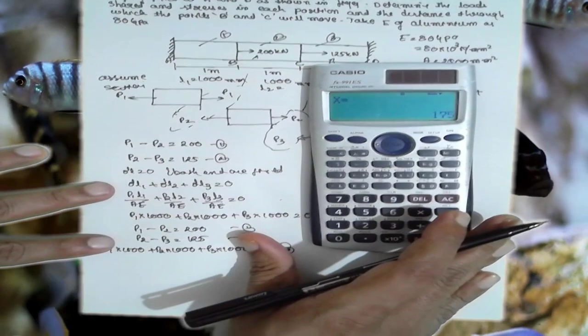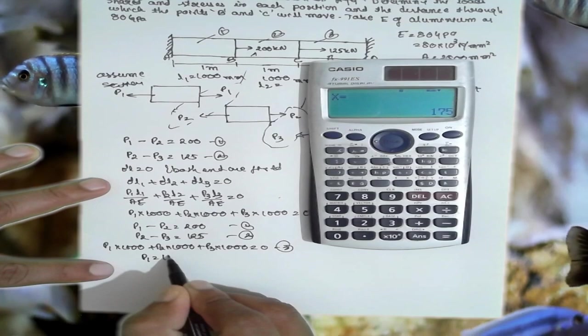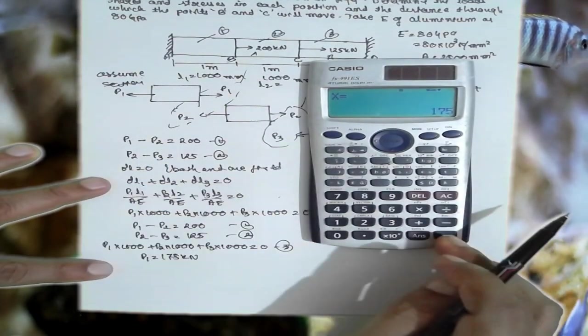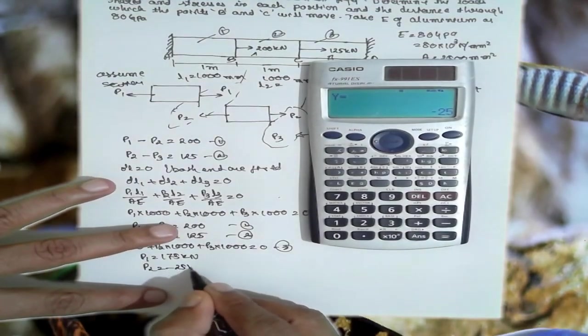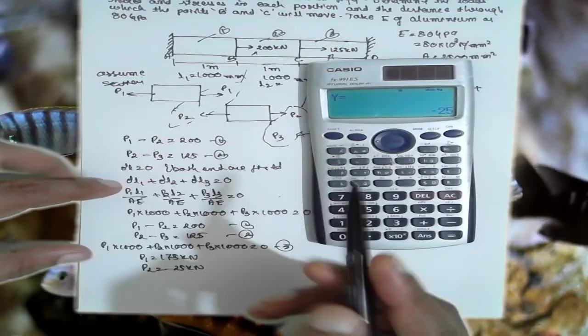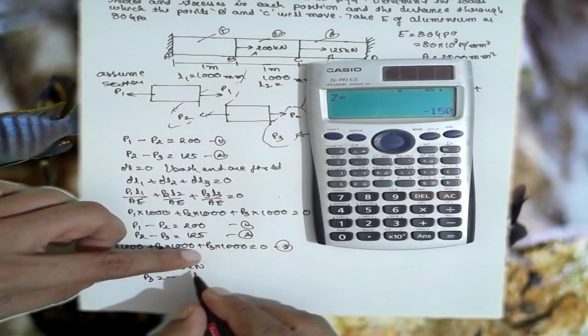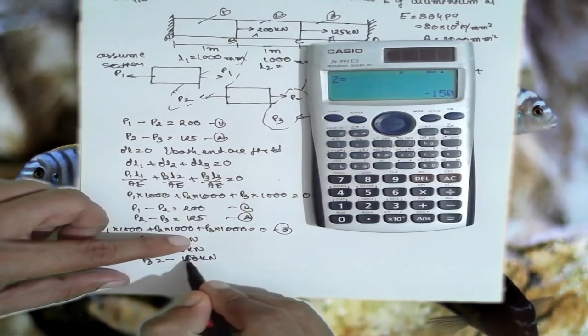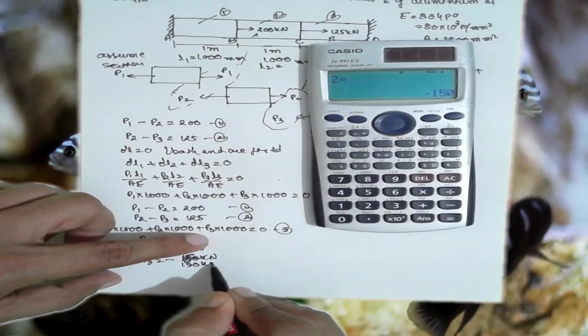Now P1, P1 is positive here. P1 = 175 kN, that means the first assumption is correct. Next, P2 = -25 kN. The second assumption is, we have to reverse the direction now. Minus indicates it is a compressive. Third, P3 = -150 kN. It is 150 kN.